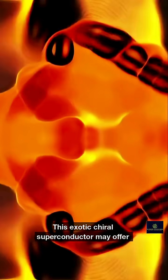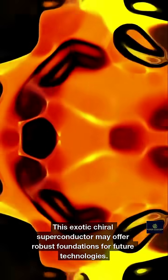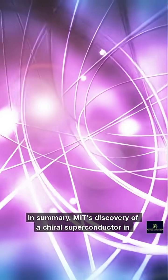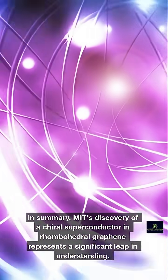This exotic chiral superconductor may offer robust foundations for future technologies. In summary, MIT's discovery of a chiral superconductor in rhombohedral graphene represents a significant leap in understanding.